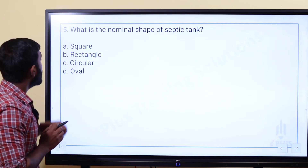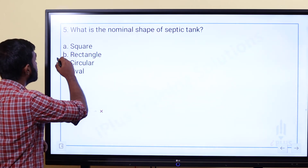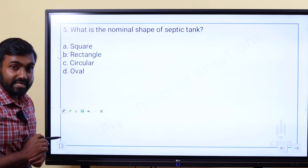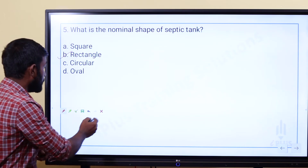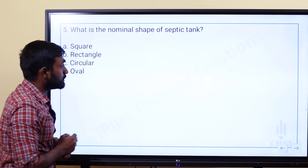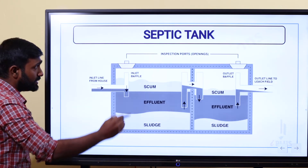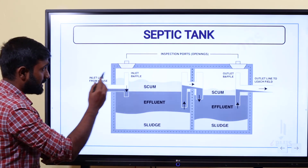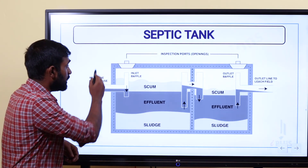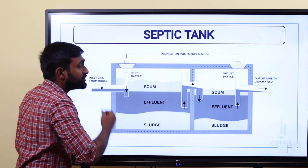The answer is Option B — rectangle. That is the nominal shape. Looking at the schematic diagram, the septic tank has a rectangular shape.